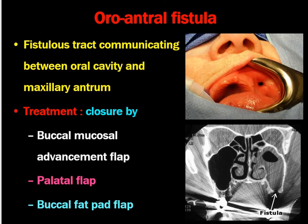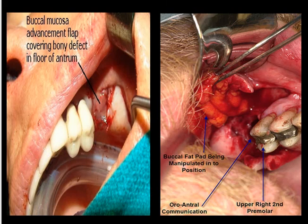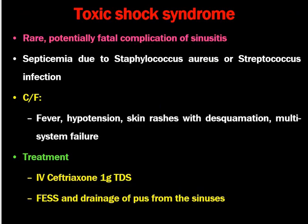Oroantral fistula is an abnormal communication between the oral cavity and the maxillary antrum. Treatment is closure by buccal mucosal advancement flap, palatal flap, or buccal fat pad flap. On CT scan, the fistulous tract can be seen communicating between the maxillary sinus and the oral cavity. The buccal mucosal advancement flap is advanced to close the sinus fistula tract, and buccal fat pad is manipulated into position.